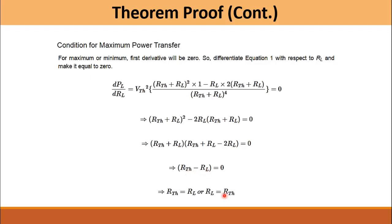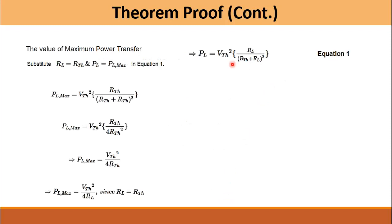By rearranging this expression, we can conclude that the maximum power can be transferred to the load if the load resistance is equal to the Thevenin equivalent resistance, or the source resistance. We then take equation 1 and substitute R_L with R_Thevenin, so that P_L equals the maximum power absorbed by the load.